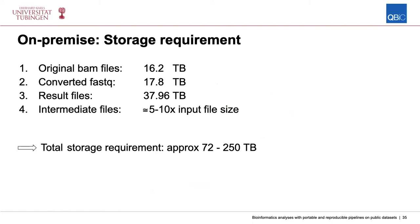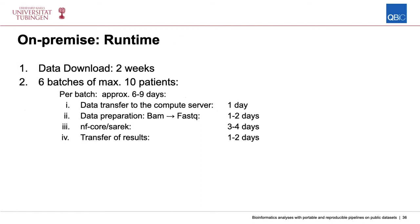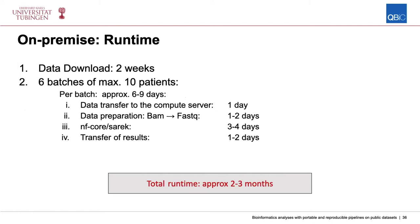The biggest challenge on-premise was storage. The original BAM files were already 16 terabytes, and the total file size — including converted FastQ and result files — would be 72 terabytes. The pipeline also generates intermediate files, roughly 5 to 10 times the input file size, coming out to around 250 terabytes. This forced us to split computation into batches of a maximum of 10 patients, with each batch taking approximately six to nine days. The data download alone took two weeks, resulting in an overall runtime of approximately two to three months.